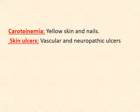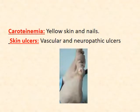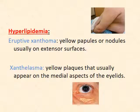Xanthomas present as yellowish papules of the skin. Skin ulcers are of two types: vascular and neurovascular. Signs of hyperlipidemia can also be obvious in the skin, such as xanthelasma — yellow plaques around the eyes — or eruptive xanthoma, which are yellow papules or nodules usually on extensor surfaces.